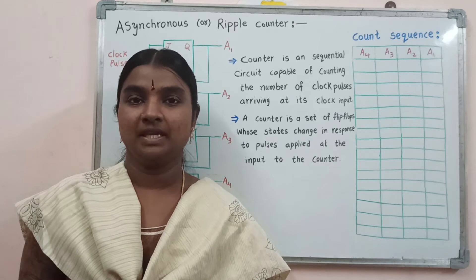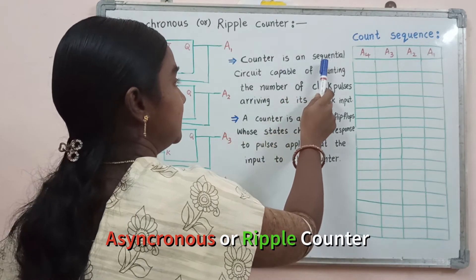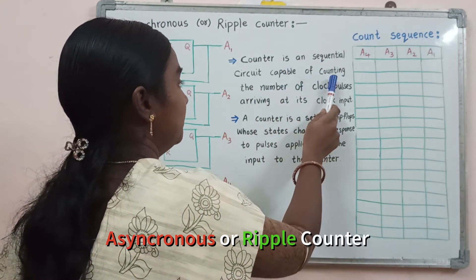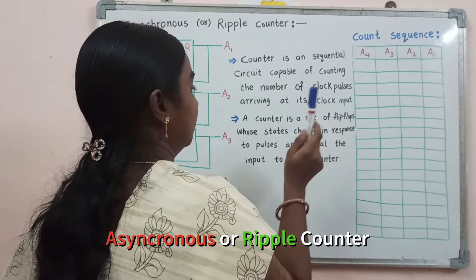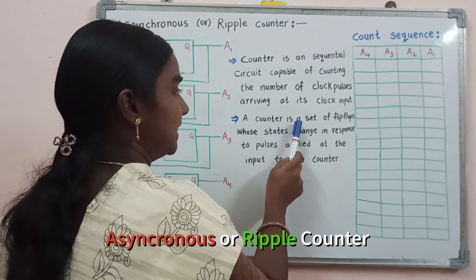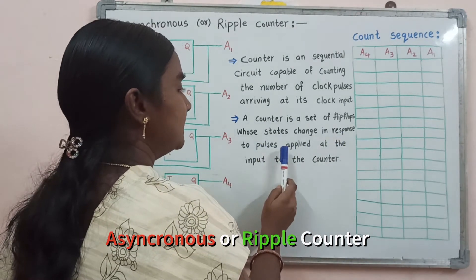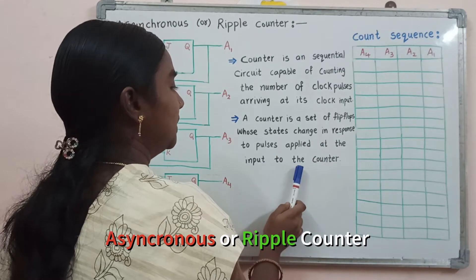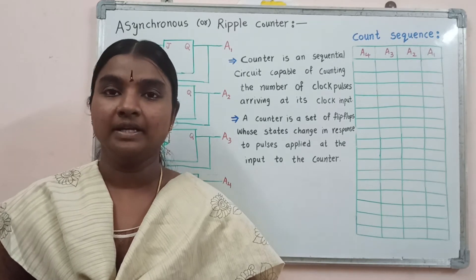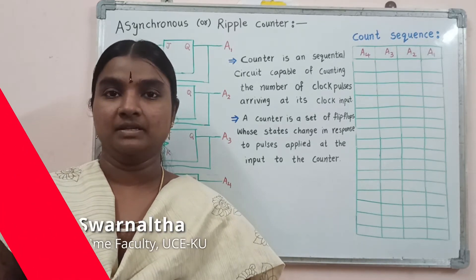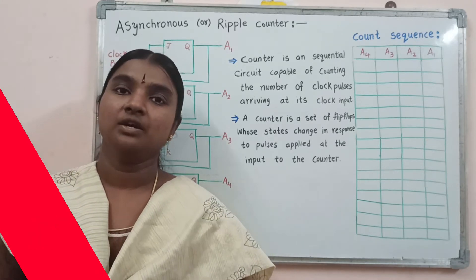First, we will see the definition of the counter. A counter is a sequential circuit capable of counting the number of clock pulses arriving at its clock input. A counter is a set of flip-flops whose states change in response to pulses applied at the input to the counter circuit. Counter circuits are divided into two categories: asynchronous counters and synchronous counters.